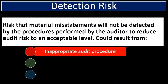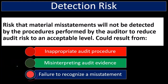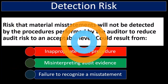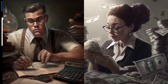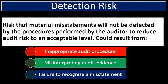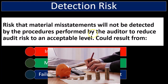Detection risk is the risk that a material misstatement will not be detected by the procedures performed by the auditor to reduce audit risk to an acceptable level. This could result from inappropriate audit procedures, misinterpretation of audit evidence, or failure to recognize a misstatement. Detection risk is on our level — it's the auditor's responsibility, unlike inherent risk and control risk which are on the company's side.